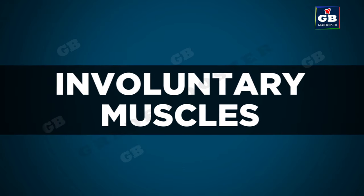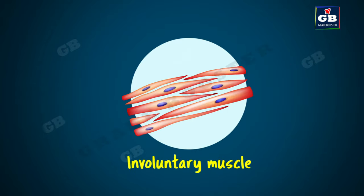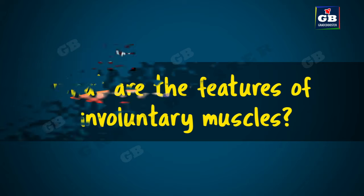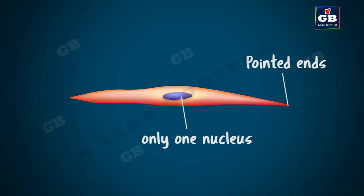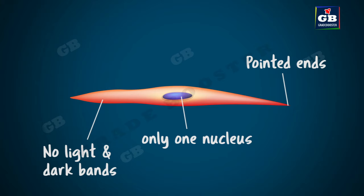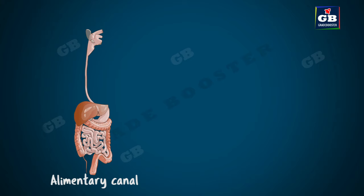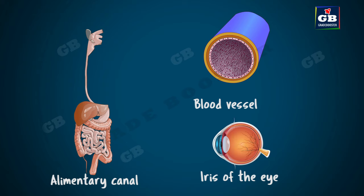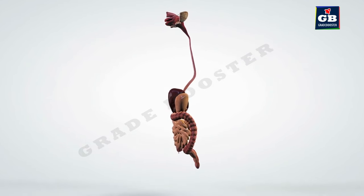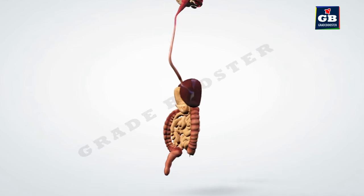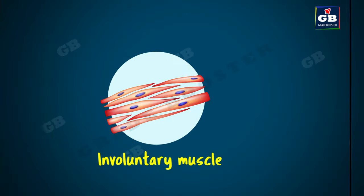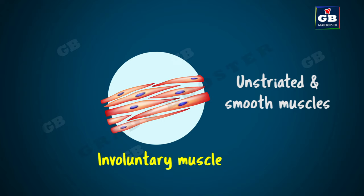Now we will see involuntary muscles. These muscle movements are not under our will, that's why they are called involuntary muscles. The cells are long with pointed ends, look spindle-shaped, and are uninucleated — meaning only one nucleus per cell. There are no dark and light bands like in voluntary muscles, hence they are also called unstriated muscles. The involuntary muscles are found in the alimentary canal, blood vessels, iris of the eye, urinary bladder, uterus, and bronchi of lungs. Involuntary movements like movement of food in the alimentary canal and contraction and relaxation of blood vessels are carried out by these muscles. Involuntary muscles are also called unstriated muscles and smooth muscles.